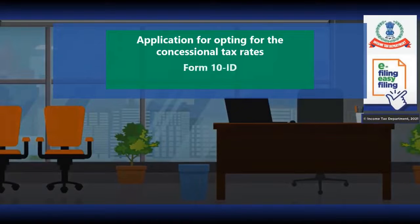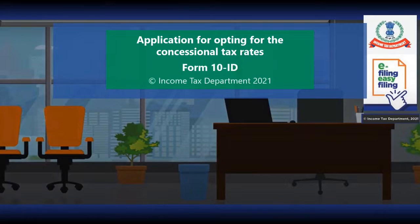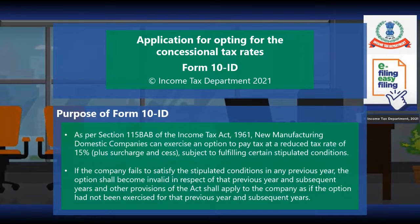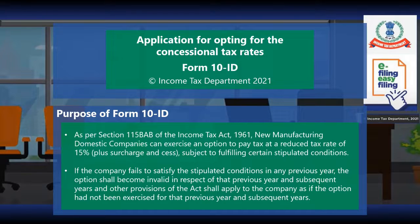Form 10 ID is an application for opting for concessional tax rates by new manufacturing domestic companies. As per section 115BAB of the Income Tax Act, new manufacturing domestic companies can exercise the option to pay tax at a reduced rate of 15% plus surcharge and cess, subject to fulfilment of certain stipulated conditions.